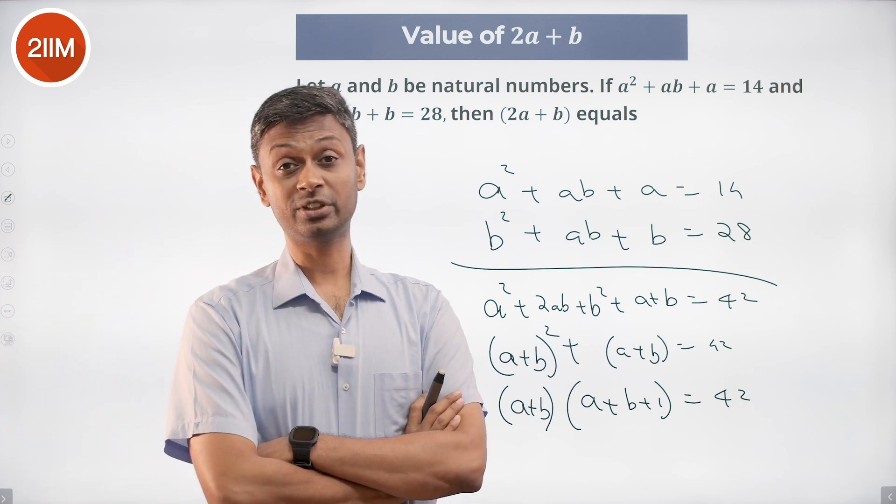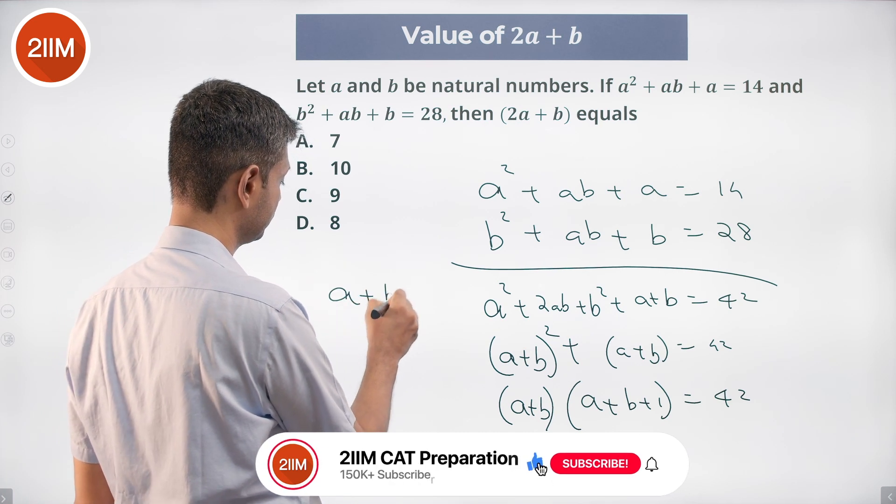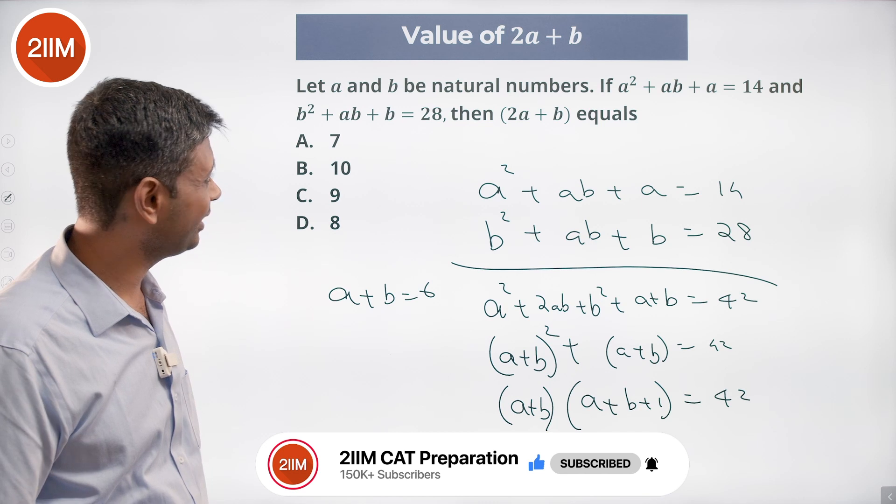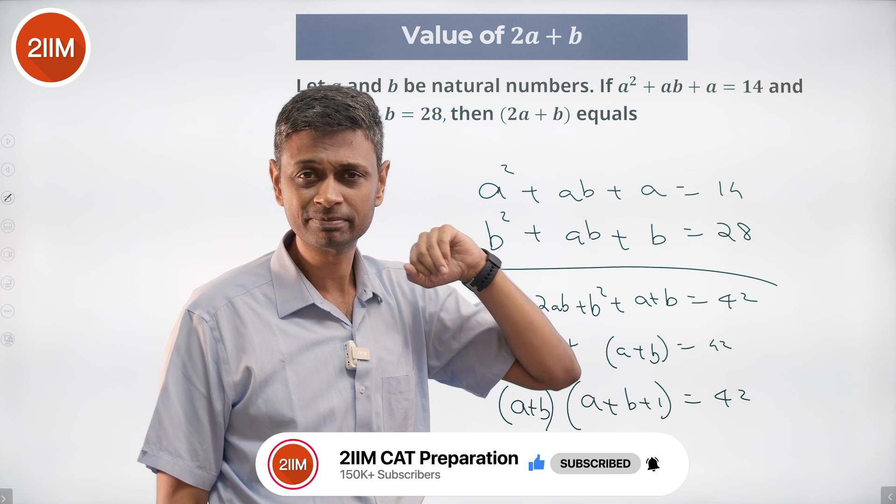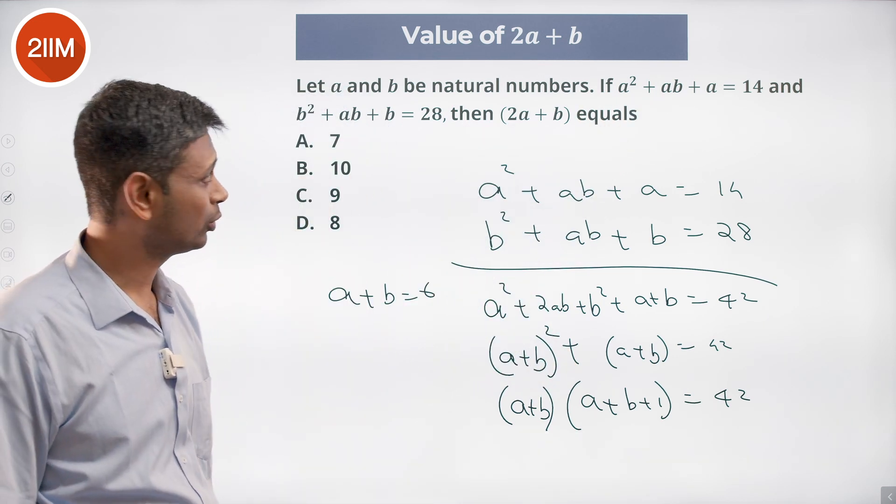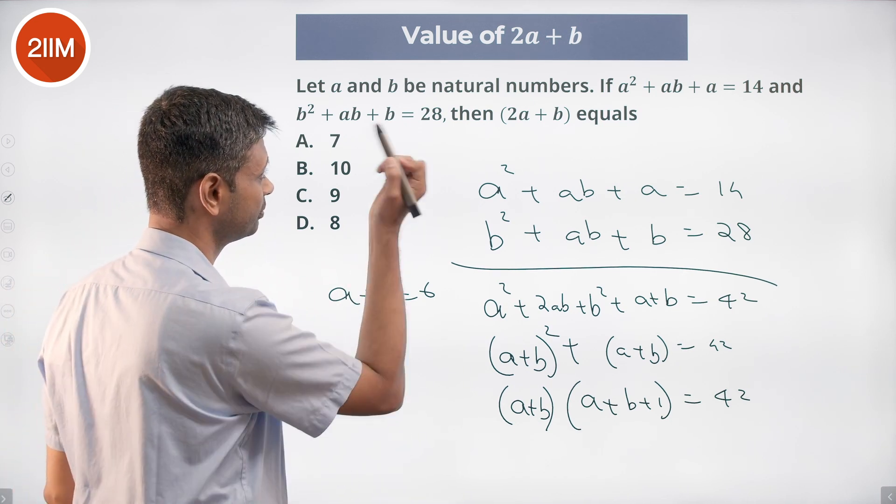Consecutive natural numbers: 6 into 7 is 42, so a plus b is 6. This cannot be 3 and 3 because then these two will give us the same answer. a appears to be smaller. a squared and a, this is b squared and b becomes double, so a appears to be smaller. Right, so I'll put a as 2.